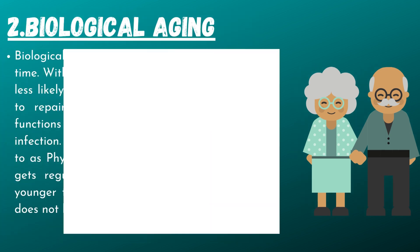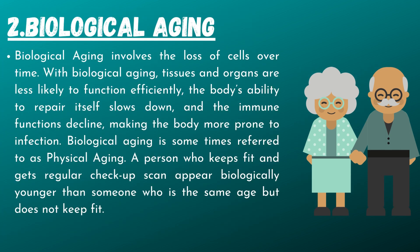Biological aging involves the loss of cells over time. With biological aging, tissues and organs are less likely to function efficiently, the body's ability to repair itself slows down, and the immune functions decline, making the body more prone to infection. Biological aging is sometimes referred to as physical aging. A person who keeps fit and gets regular checkups can appear biologically younger than someone who is the same age but does not keep fit.